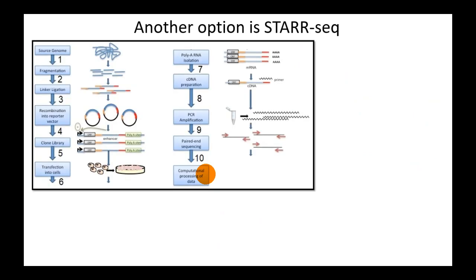It is STARR sequencing. How does it work? First, genomic DNA is randomly sheared and broken down into small fragments. Then you insert these fragments into plasmids - you make a DNA library. To do this, you ligate linker groups on both 5' and 3' ends of your fragments, followed by incorporation into a reporter vector. This vector already contains a core promoter and reporter gene.